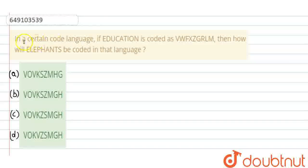Welcome to Doubtnut. Our question is: in a certain code language, if EDUCATION is coded as like that, then how will ELEPHANTS be coded in that language? So, let us know how to code elephants.